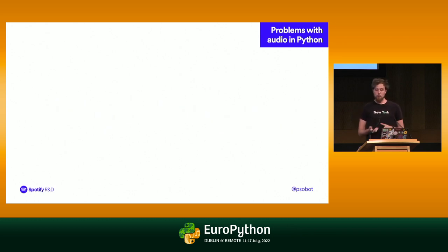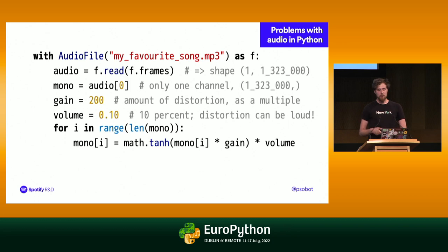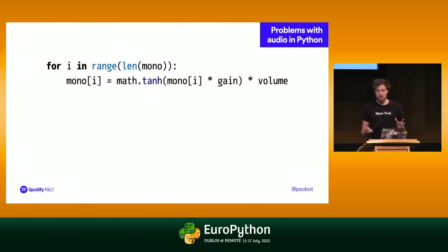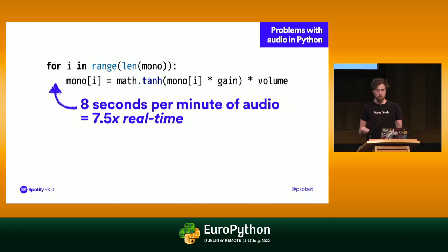Let's look at one other common problem with audio in Python. Let's go back to the distortion example with that cool guitar. Here's the code we had before — we read in our entire audio file, and then we do math.tanh at the bottom, looping over every single sample in Python. This is fairly fast — or at least fast enough. If I run this on my laptop, it takes about eight seconds per minute of audio. That's a way to measure audio code: how long it took divided by the amount of audio processed. This code runs in about 7.5 times real time — 7.5 times faster than just playing back the audio itself.